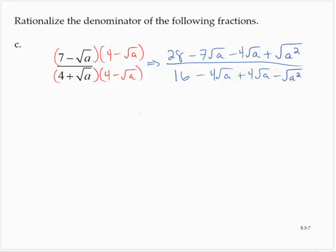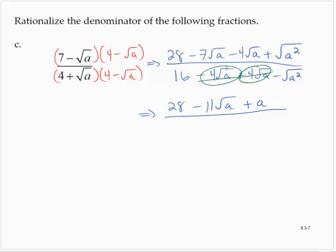Working with the numerator: 28, and I've got some like radicals, so that's minus 11 square root of a, and then plus the square root of a squared, which is just a. So the numerator is 28 minus 11 root a plus a. In the denominator, the like radicals go to 0, leaving 16 minus a.